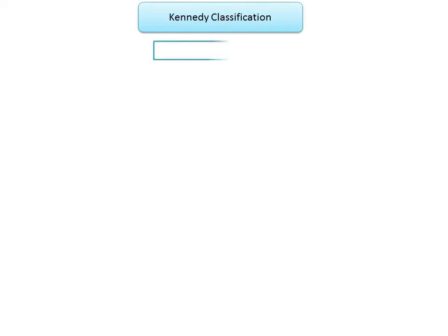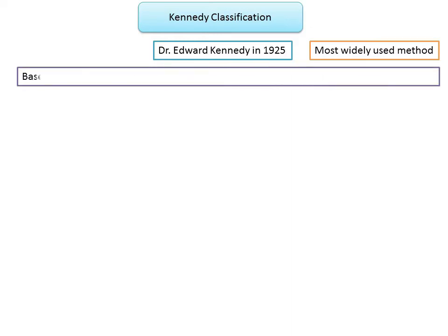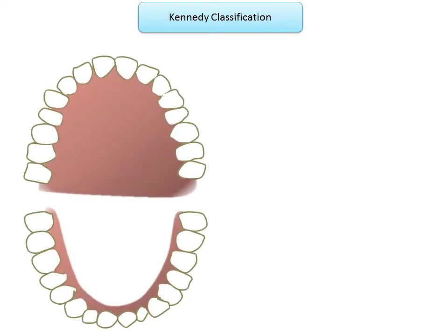Kennedy's classification was introduced by Dr. Edward Kennedy in 1925 and is the most widely used method of classification. It is based on the relationship of edentulous spaces to the abutment teeth in an anterior-posterior reference. It attempts to classify the partially edentulous arch in a manner that suggests certain principles of design for a given situation. Kennedy divided all partially edentulous arches into four basic classes.